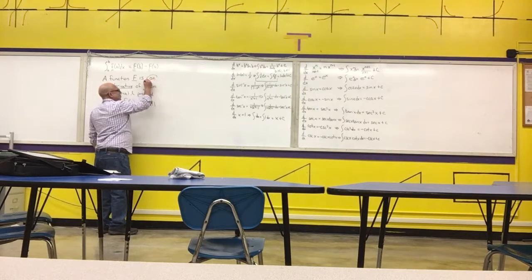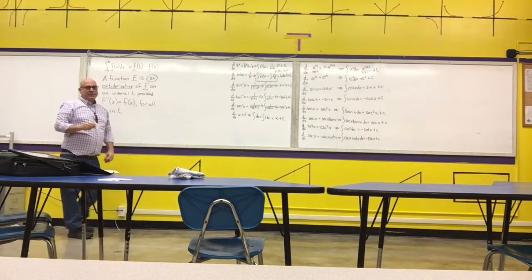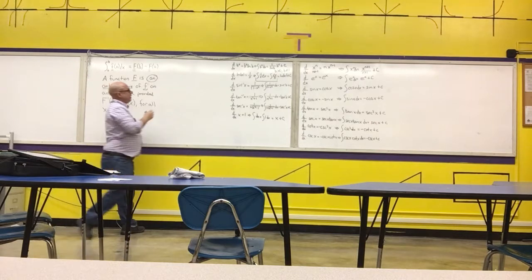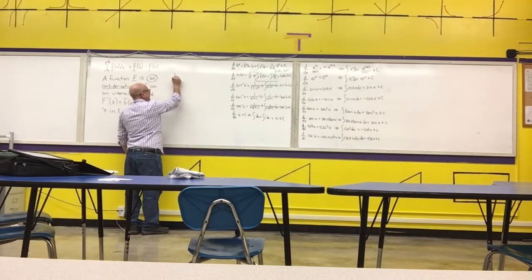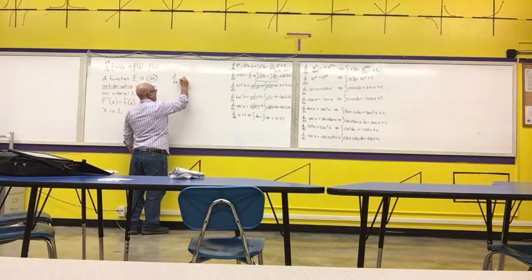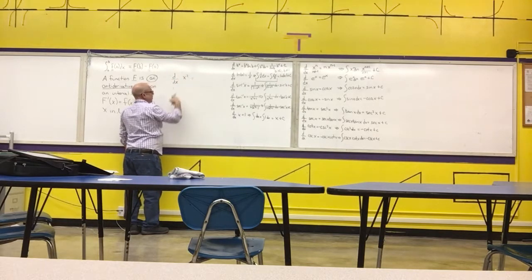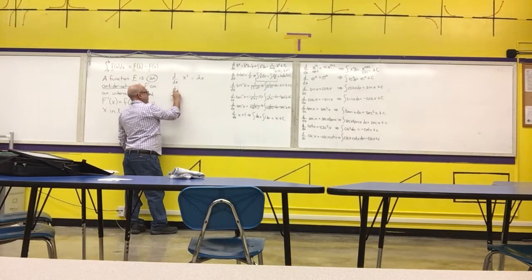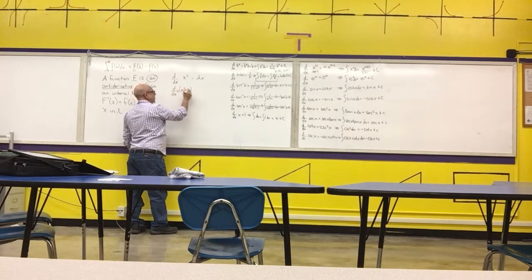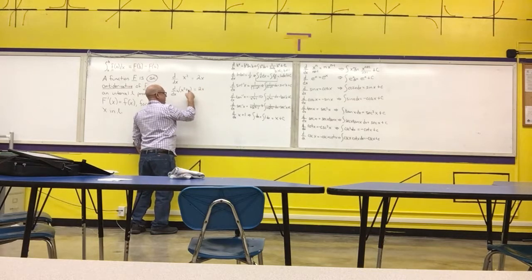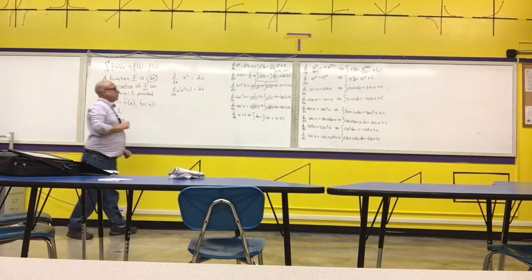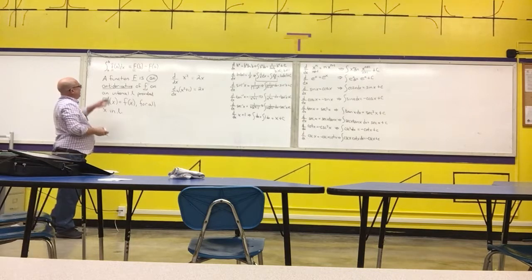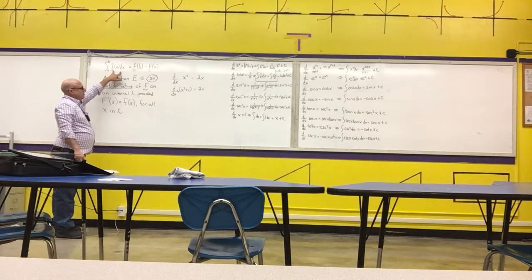Notice it says 'an' antiderivative. The reason for that is: if we take the derivative of x squared, we get 2x. And if we take the derivative of x squared plus 1, we again get 2x plus 0, which is 2x.